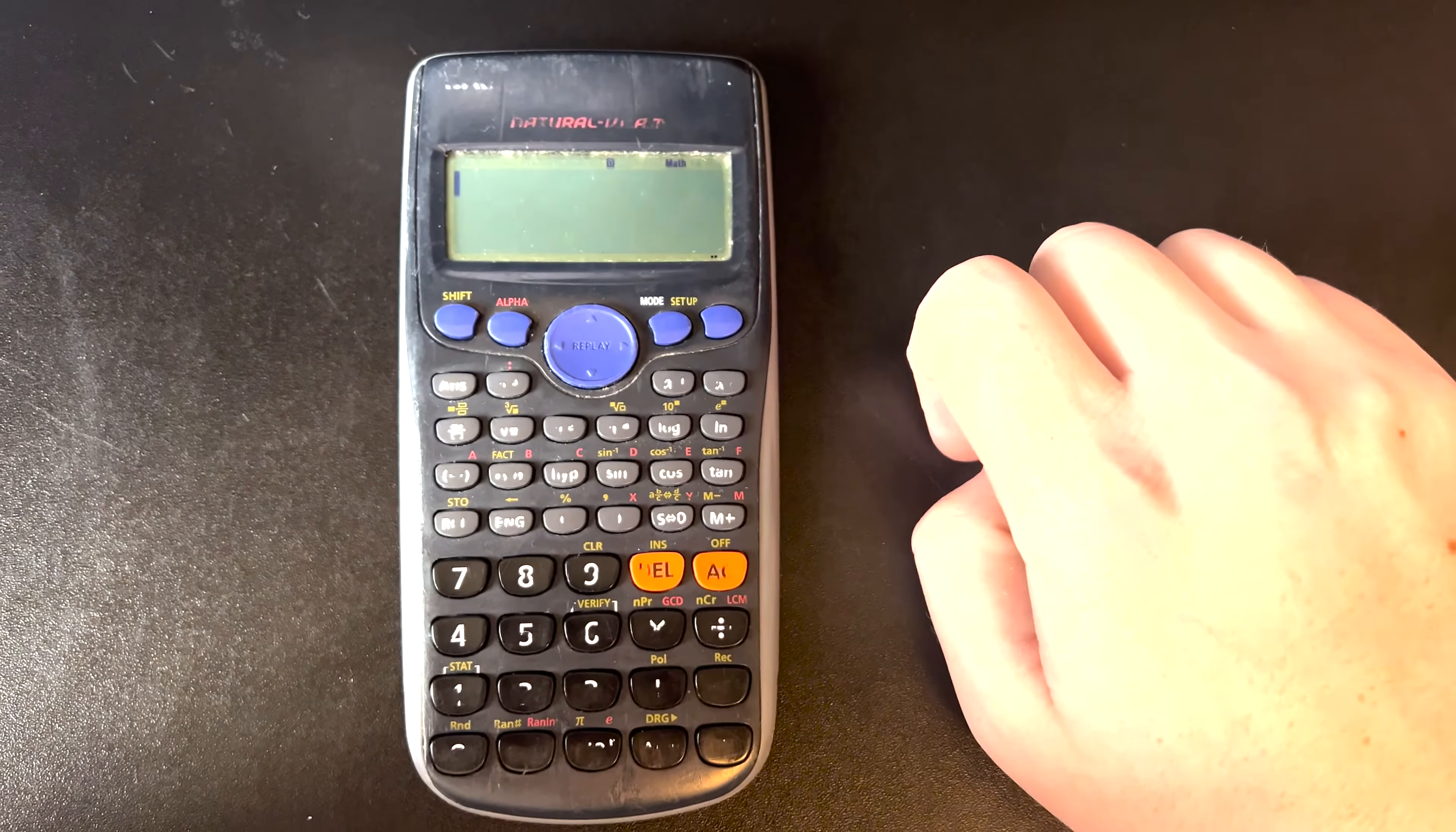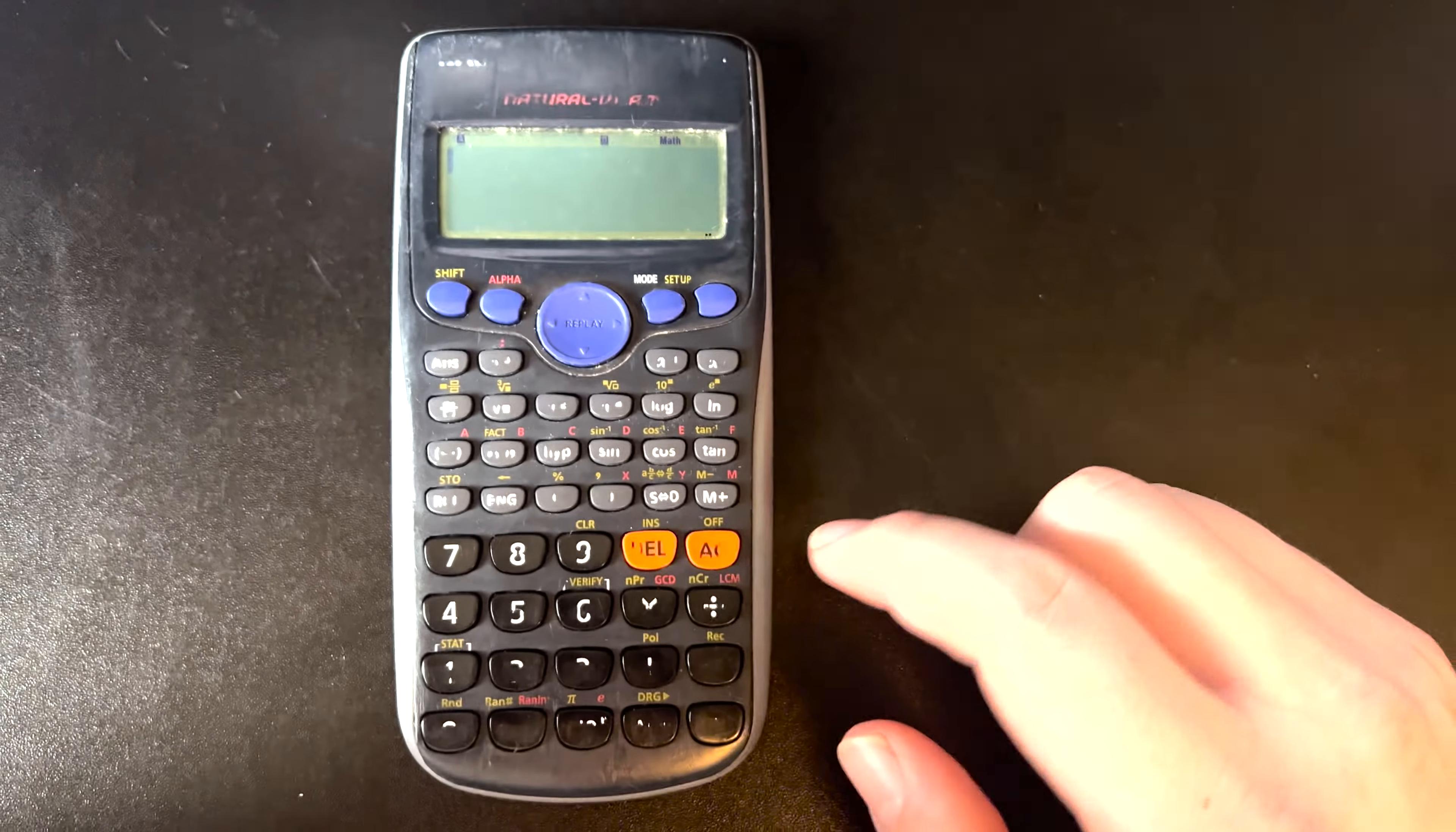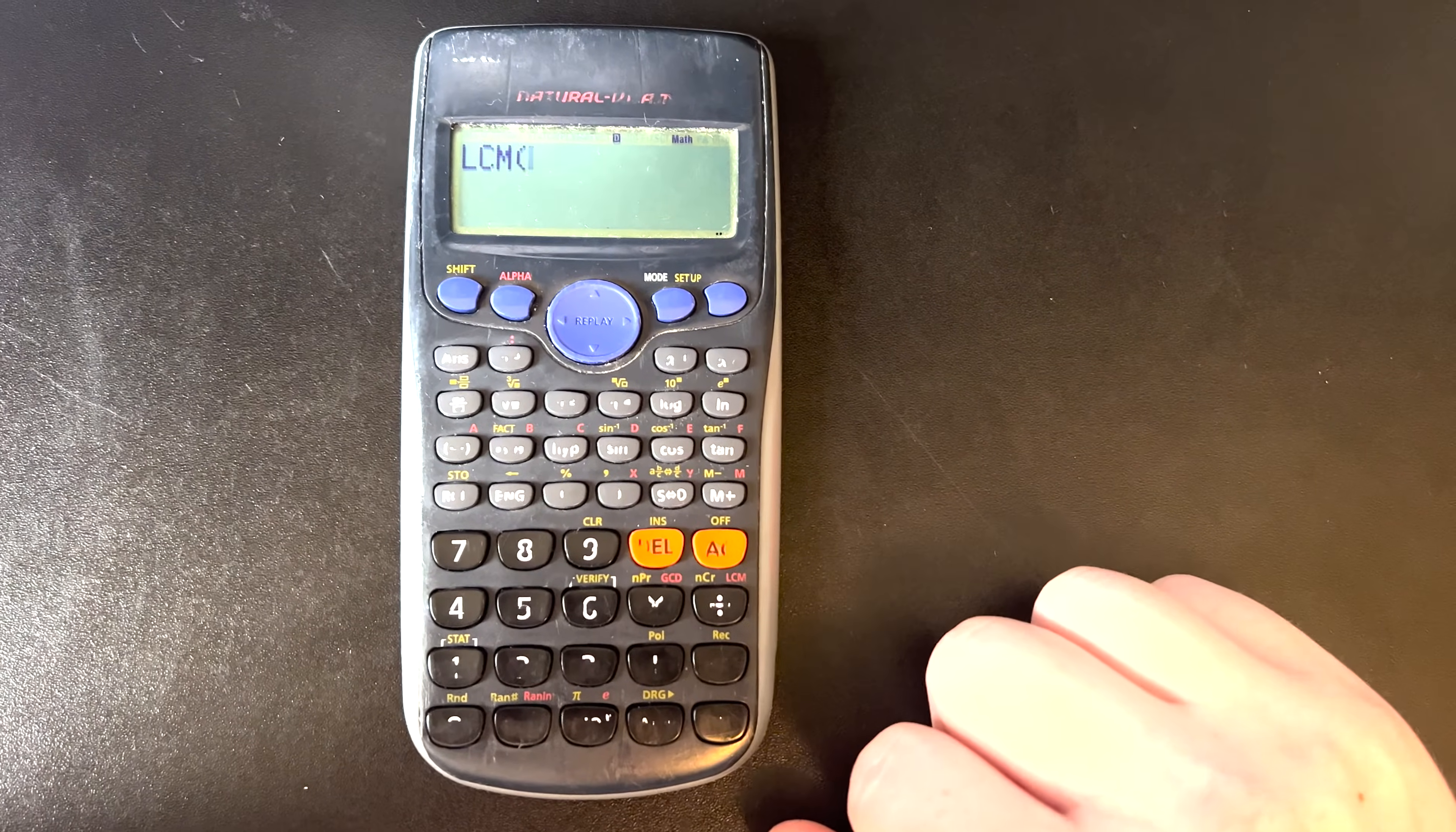Okay, so now what about our lowest common multiple? So again, alpha, and now on the divide, we see it says LCM. We press that, and now we can input any two numbers, and it will tell us the least common multiple.